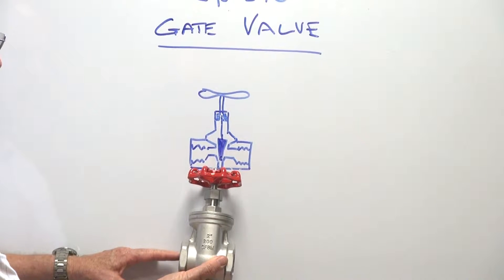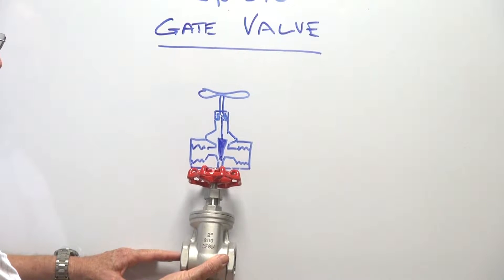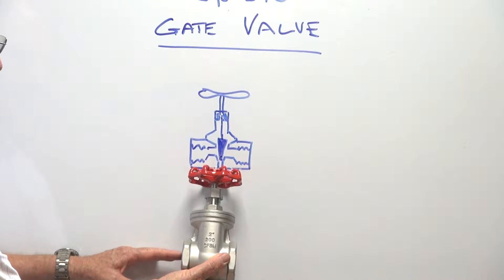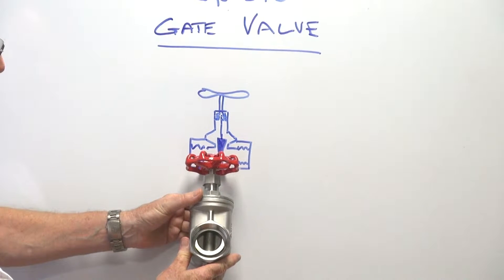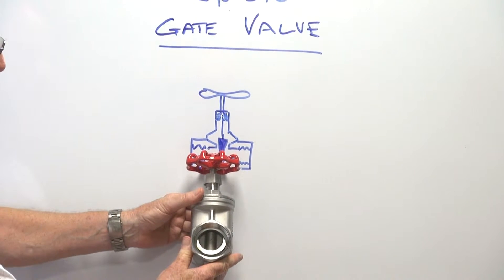It's the 316 stainless steel gate valve - cast 316 housing, the stem, the body, and also the gate itself. I'll turn this around so you can see the gate inside there. It's a metal to metal face gate.